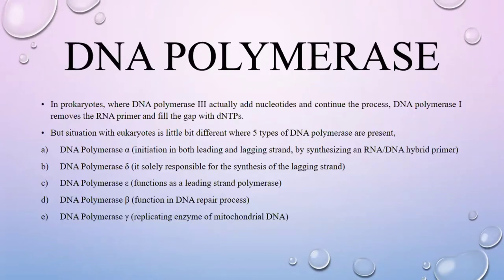Eukaryotes में पांच types के DNA polymerase होते हैं: alpha, delta, epsilon, beta, और gamma — सबकी अलग-अलग activities होती हैं। DNA polymerase alpha एक RNA-DNA hybrid primer बनाता है और leading तथा lagging strand दोनों में initiation करवाता है।